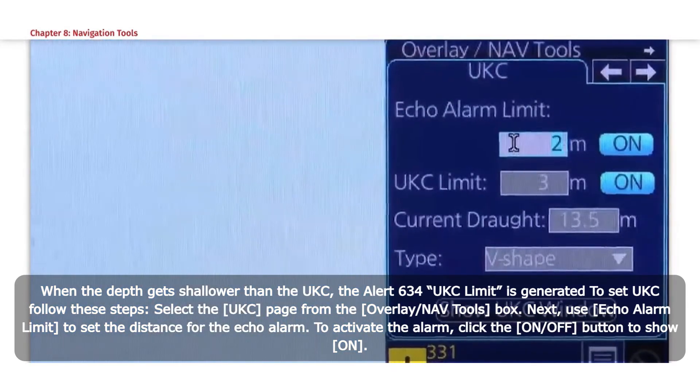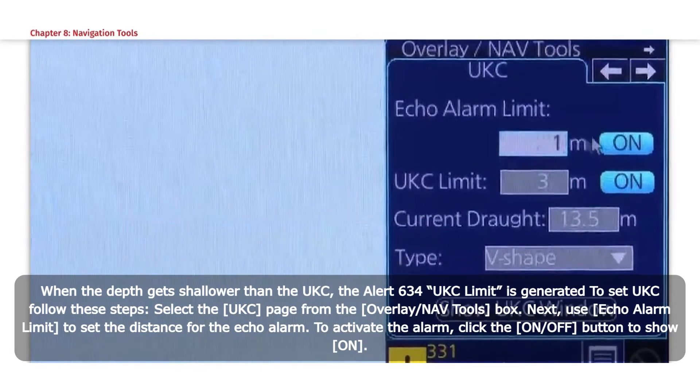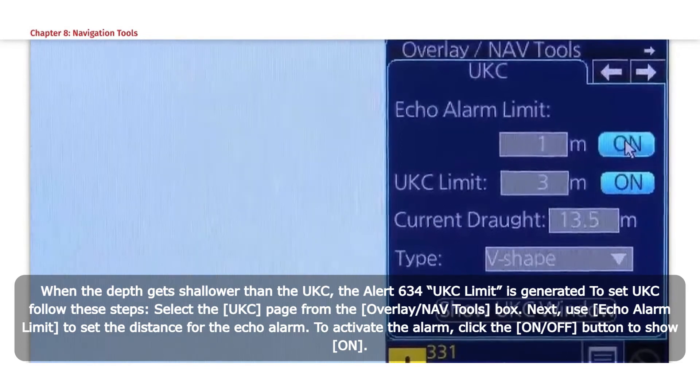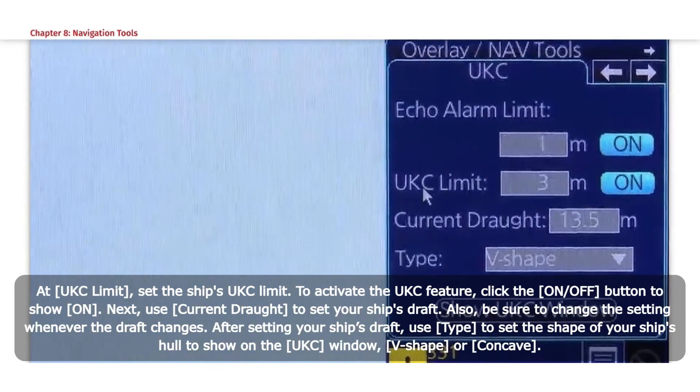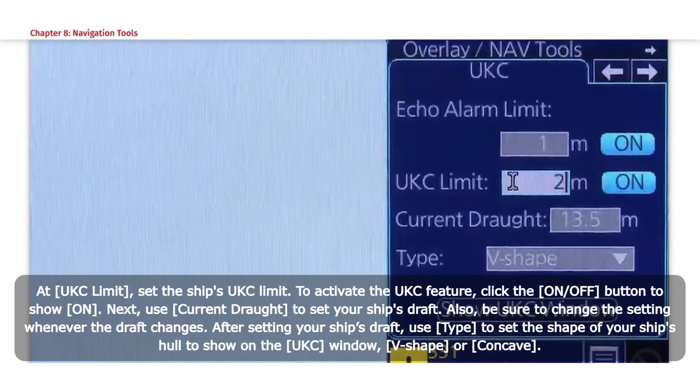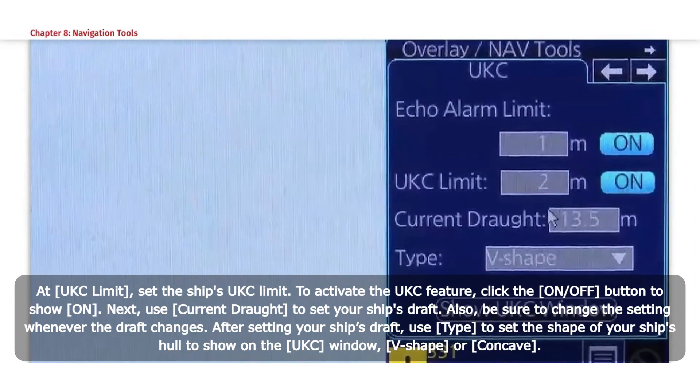Next, use Echo Alarm Limit to set the distance for the Echo Alarm. To activate the alarm, click the On-Off button to show On. At UKC limit, set the ship's UKC limit. To activate the UKC feature, click the On or Off button to show On.